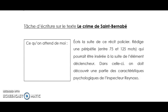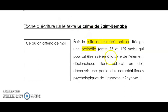Alors, on commence. C'est une tâche d'écriture sur le texte du crime de Sainte-Barnabé. Donc, Geneviève, il faudrait que tu commences à lire la situation d'écriture. Écris la suite de ce récit policier. Rédige une péripétie entre 75 et 125 mots qui pourrait être insérée à la suite de l'élément déclencheur. Dans celle-ci, on doit découvrir une partie des caractéristiques psychologiques de l'inspecteur. Là, tu es en train de tout lire ça, mais tu ne t'en rappelleras pas si tu lis trop vite. Donc, ça serait important que tu soulignes les éléments essentiels. OK. Bien, « Écris la suite de ce récit policier », bien ça c'est important. Il faut que j'écrive la suite. Rédige une péripétie, ça c'est important. Le nombre de mots aussi, c'est important, pas qu'il soit trop long. Ça, je souligne ça. Qui pourrait être insérée à la suite de l'élément déclencheur. Dans celle-ci, on doit découvrir une partie des caractéristiques psychologiques de l'inspecteur. Ça aussi, c'est important, je le mets.